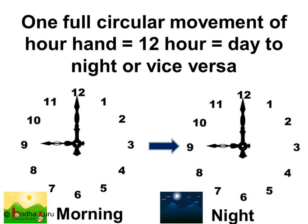And one complete movement of hour hand in a circle takes how much time? It is simple. Just count the numbers: 1, 2, 3, 4, 5, 6, 7, 8, 9, 10, 11, 12. 12 hours.